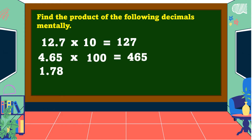Another one: one and seventy-eight-hundredths times ten. The answer is equal to seventeen and eight-tenths.